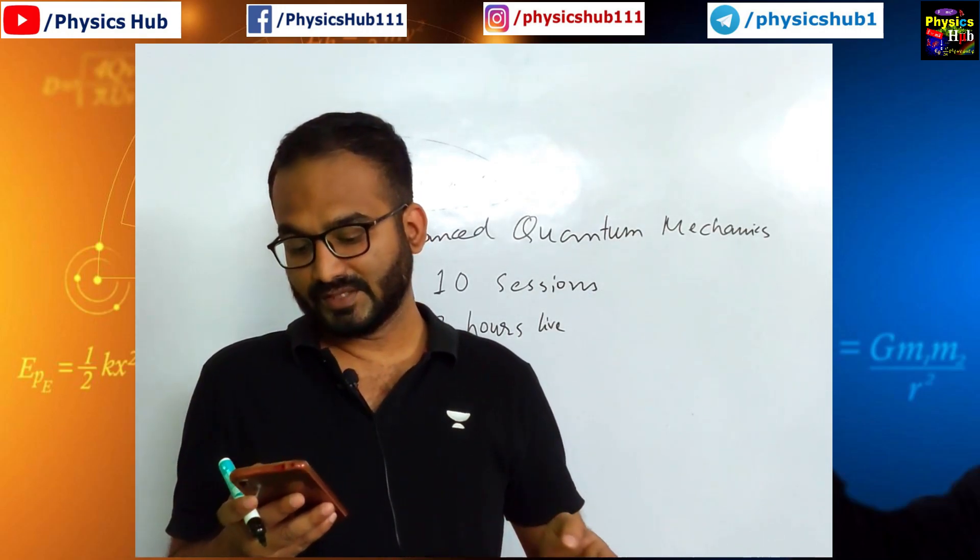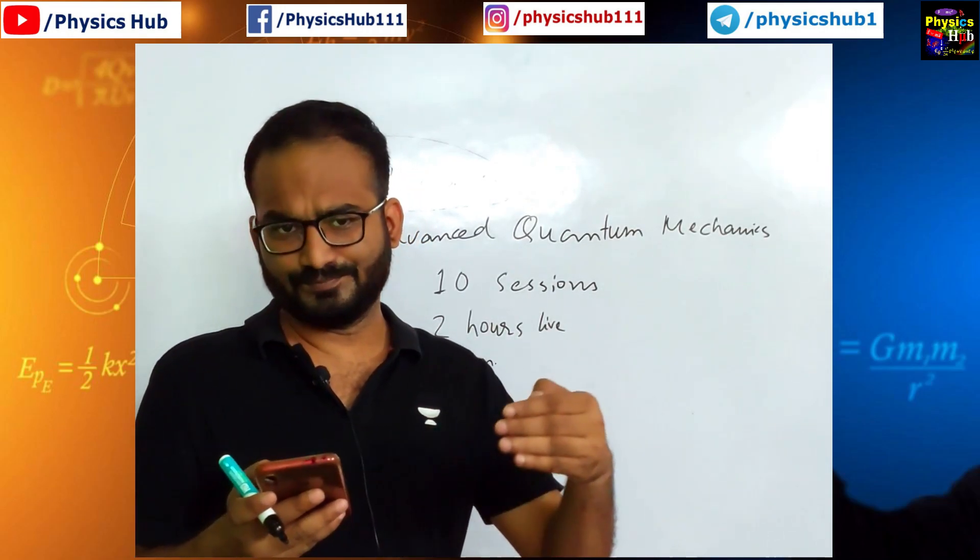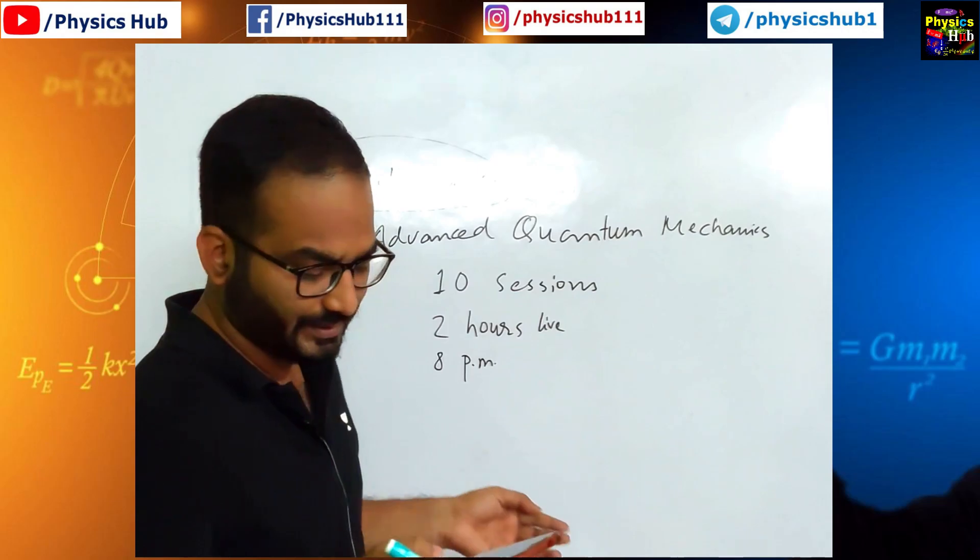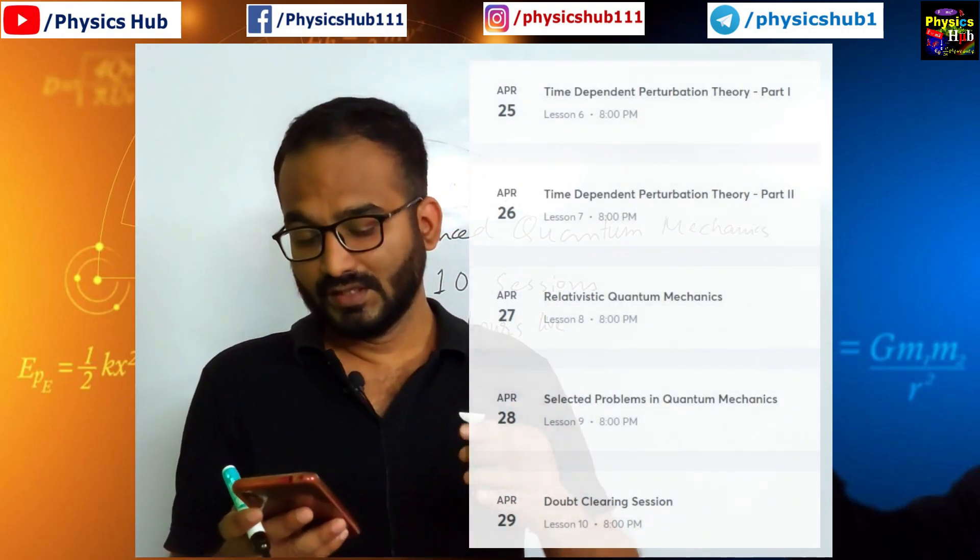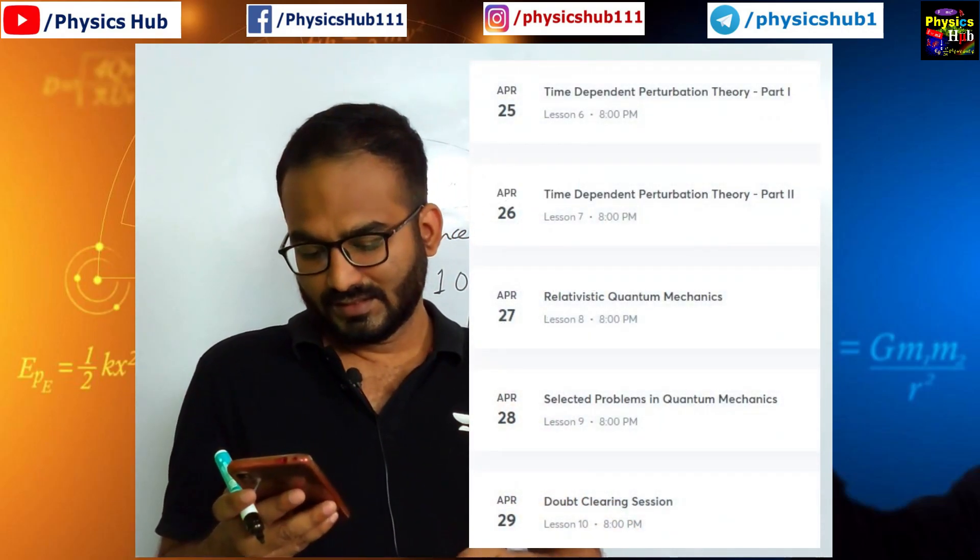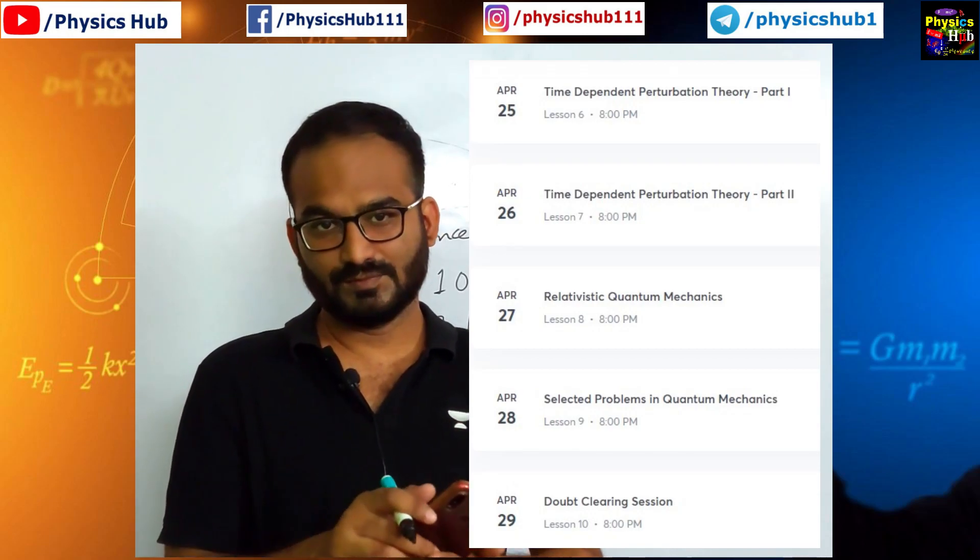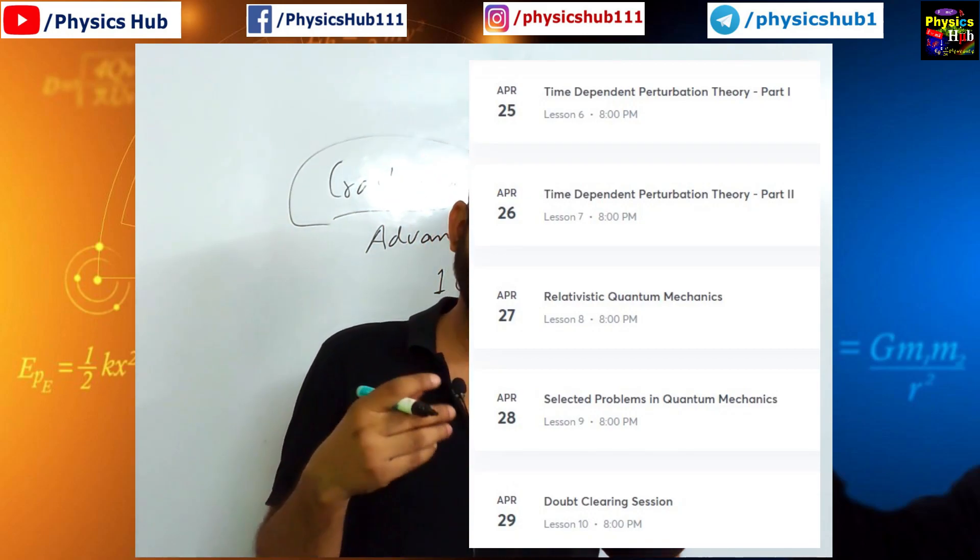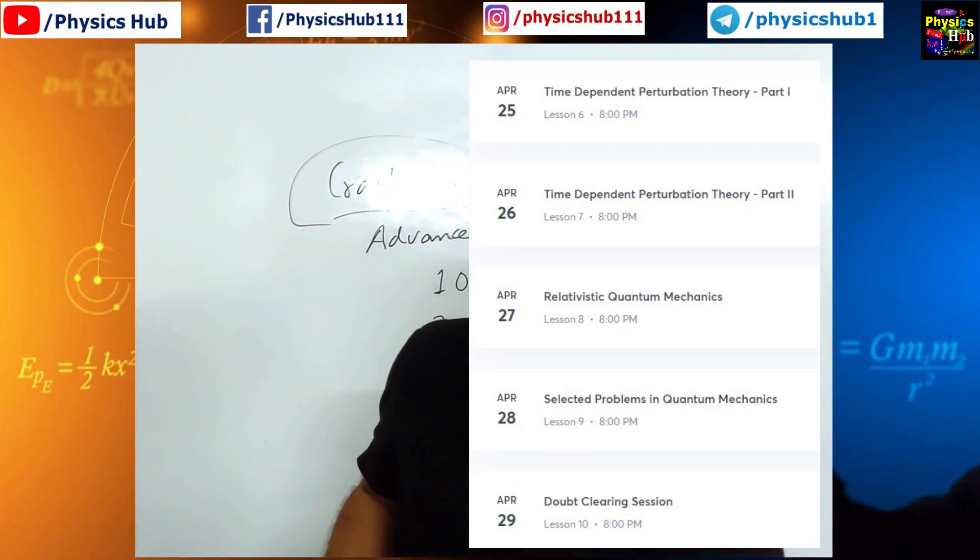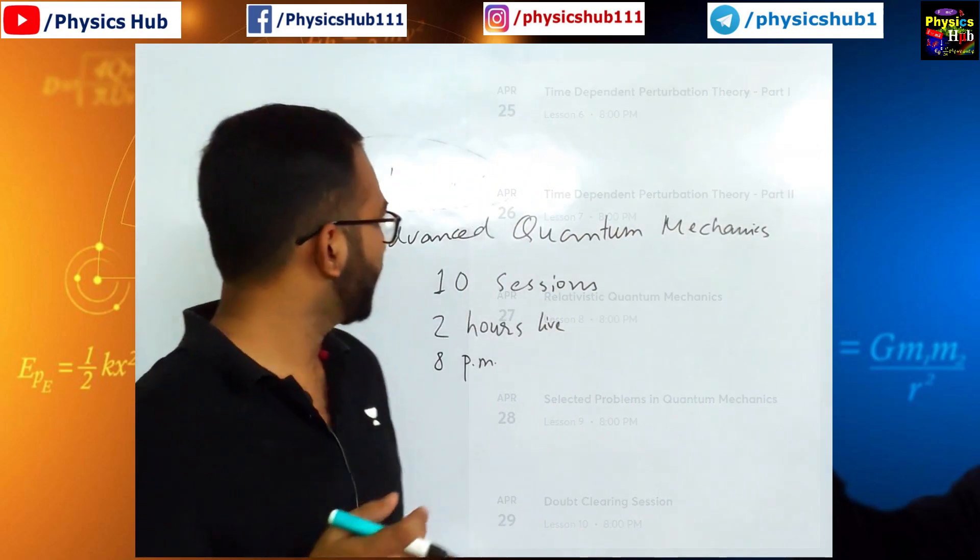Then we'll go for time dependent perturbation theory, and time dependent perturbation theory will take some time. Then we'll go for relativistic quantum mechanics, then some selected problems, some special problems in quantum mechanics. And it will end with some doubt clearing session. So this is going to be a mini course.